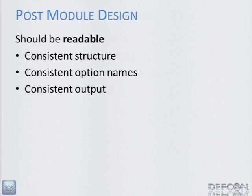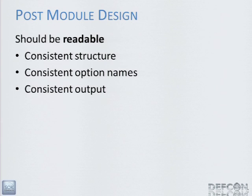Modules should be readable. There's some cool metadata available in the module structure, and if everything has a consistent structure — which we strive for in the framework — then it's a lot easier to write new stuff and understand what a single module does. If we have consistent output, you'll always have an understanding of what this module is doing as it moves along.